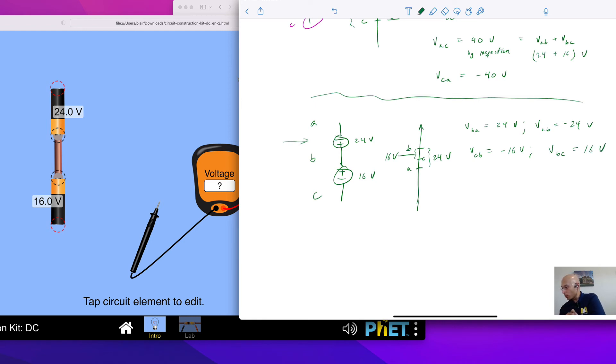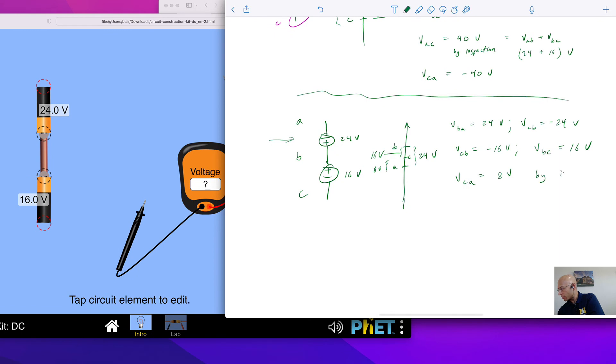Now, if we ask ourselves, well, what is VCA? Well, looking at this diagram, we can then tell that it's 8 volts, because that's the difference between the 24 and the 16. So we'll put 8 volts, by inspection. And we would then recognize that VAC, well, that's negative 8 volts. Another thing you could do, sort of by inspection, is recognize that VCA is VBA minus VBC.